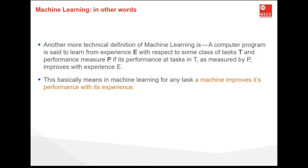A more technical definition of machine learning is: a computer program is set to learn from experience E, with respect to some class of task T, and performance measure P. If its performance at task T, as measured by P, improves with experience E. This basically means that in machine learning, for any task, a machine improves its performance with its experiences.